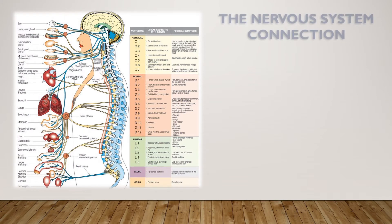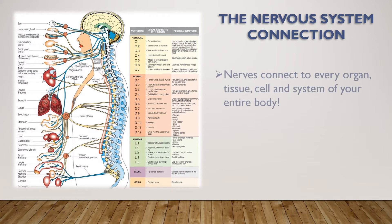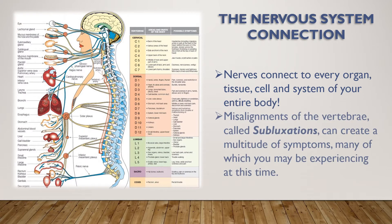This chart shows where the nerves exit the spine and go to the organs of the body. Oftentimes we just think that misalignments in the vertebrae putting pressure on a nerve can create pain and spasm, but we don't often think that the organs can be compromised as well. In fact, nerves connect to every organ, tissue, cell, and system of your entire body. Any misalignments of a vertebra which pinch or constrict the nerves are called subluxations, and these subluxations can create a multitude of symptoms, many of which you may be experiencing at this time.